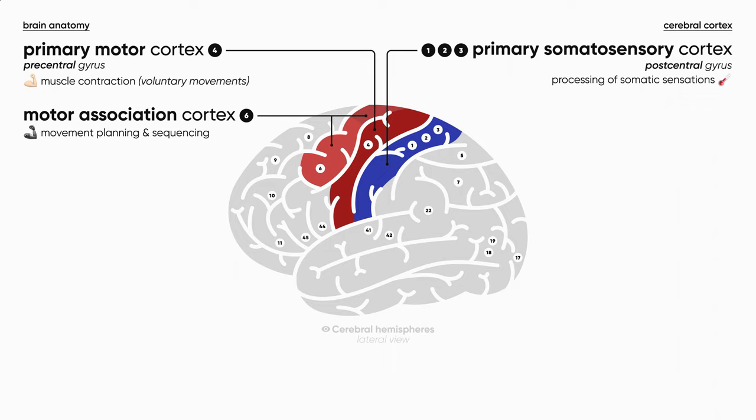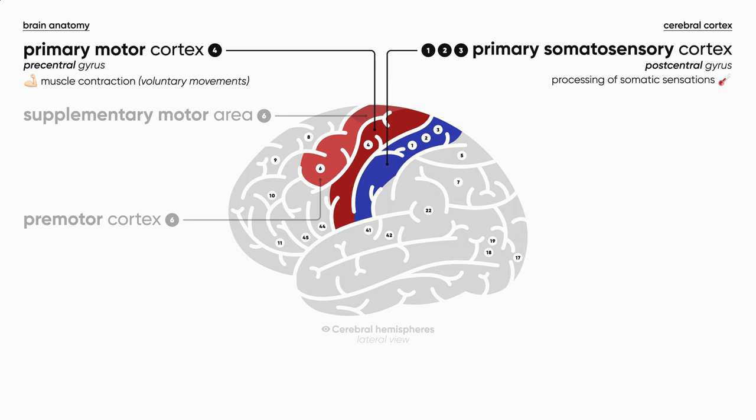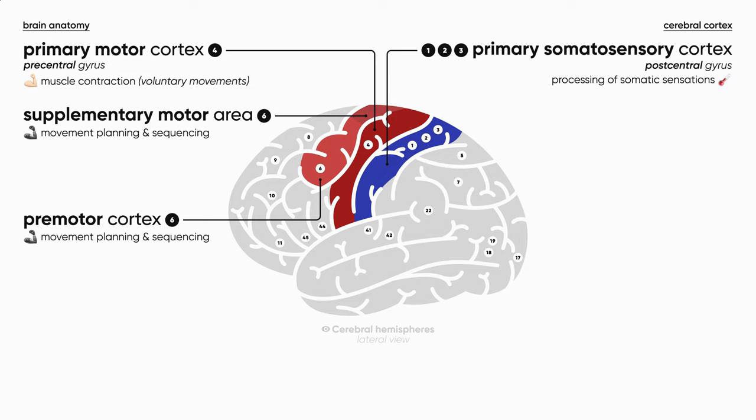Anterior to the primary motor cortex, we have the motor association cortex — this is Brodmann area number 6. It consists of two regions: the premotor cortex or premotor area, and the supplementary motor area. These areas are responsible not just for simple muscle contraction or voluntary movement, but for the planning of movement — motor planning and sequencing of movement. The function gets more complicated compared to the primary motor cortex. Remember this principle of complication.